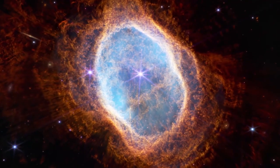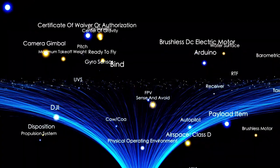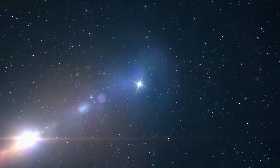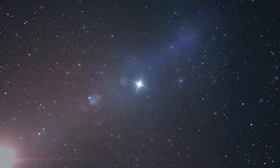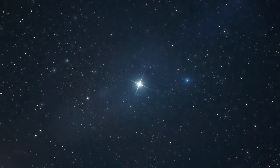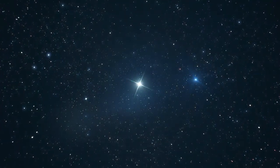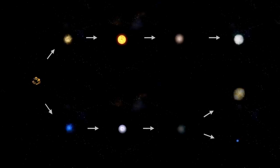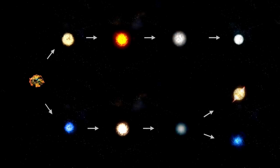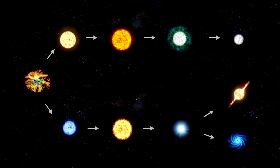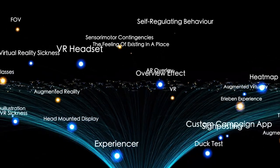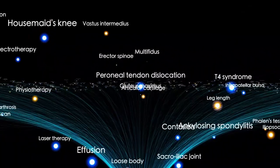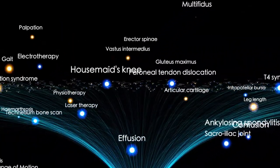This event has also reignited questions about the internal mechanics of red supergiants. These stars are extremely difficult to model because of their immense scale and the turbulent conditions within them. Betelgeuse has long puzzled scientists with its irregular light patterns, and this sudden brightening adds another layer of complexity. Understanding why this change occurred might help explain not only Betelgeuse's behavior, but also the life cycles of similar stars.